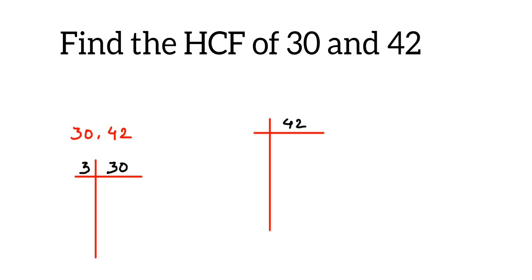3 into 30 is 10, then 10 goes into 2, so 2 into 10 is 5. Next, 5 is a prime number, so 5 into 5 is 1. You have to keep doing this till you get 1.